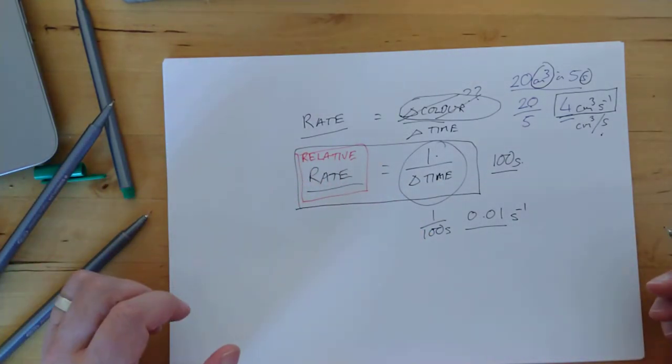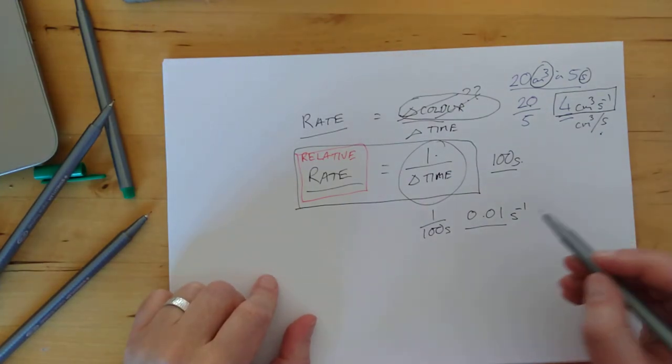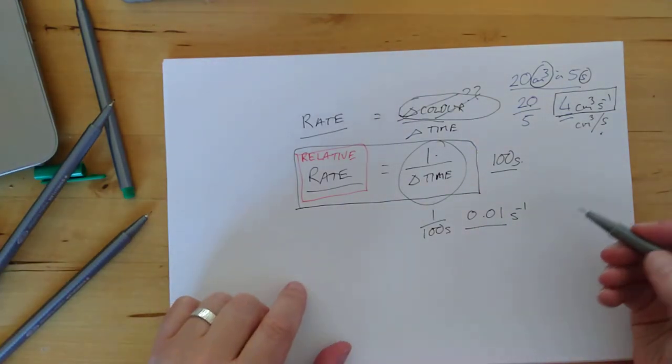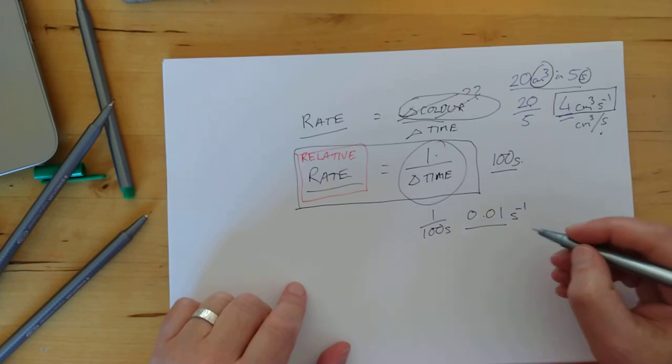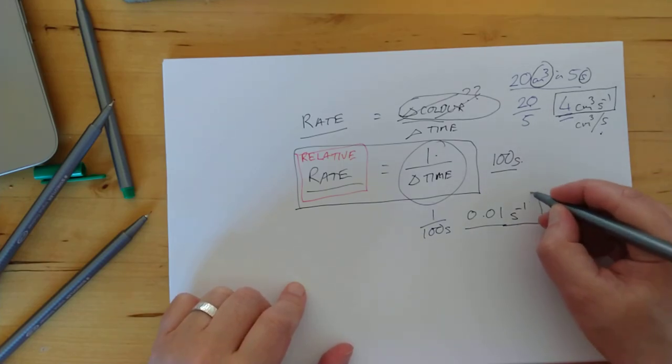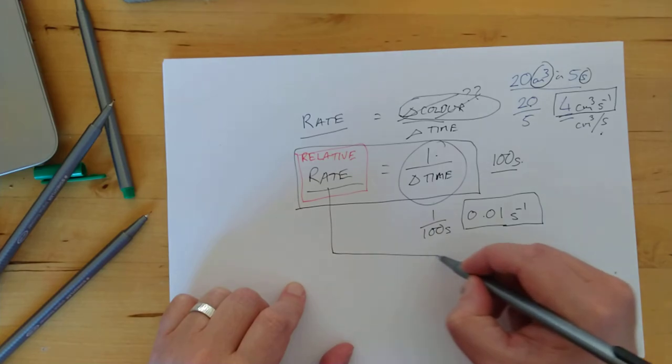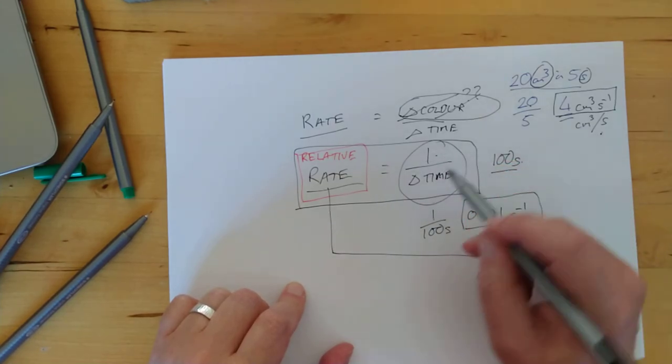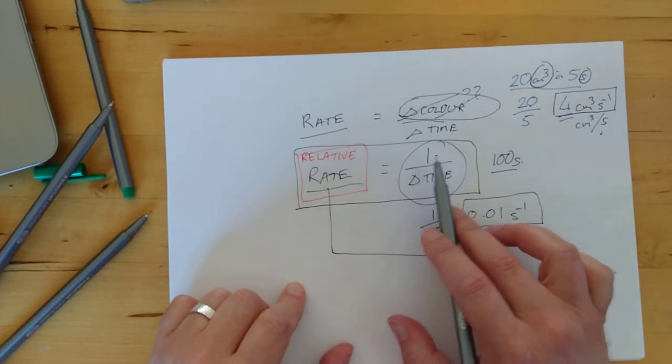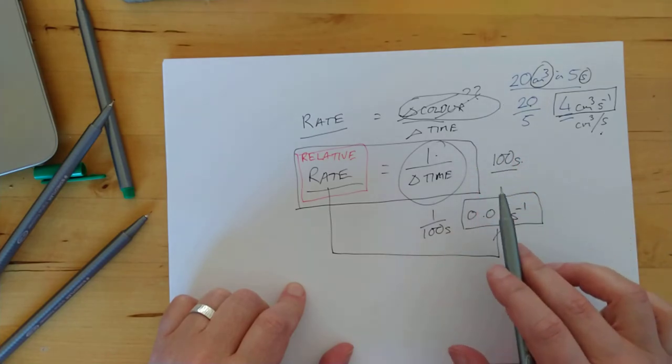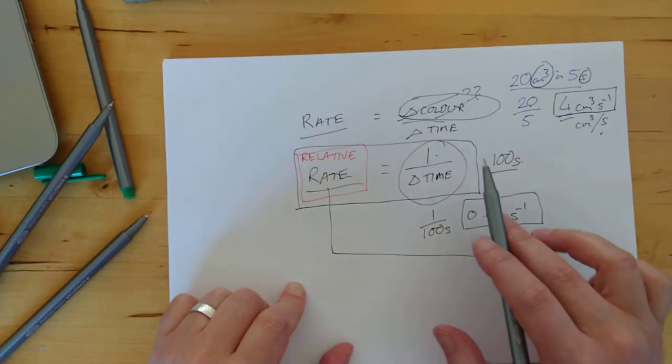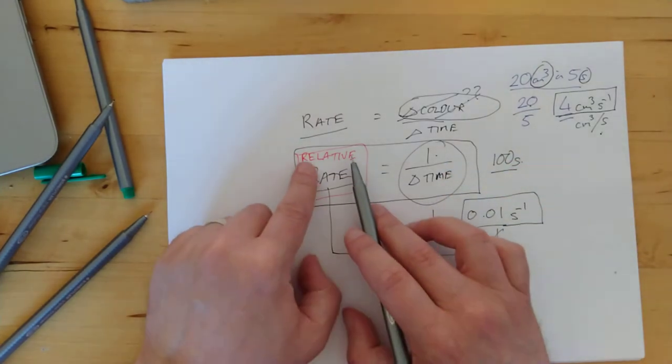Just that. I know, a bit weird looking. How do you pronounce that? Well, you just say it's per second. So 0.01 is the rate number and seconds to the minus one are our units. So that is how you do the calculations for what's called relative rate when you don't have a top line, when there's no change in mass or volume. It's just a colour change and it's called relative rate now.